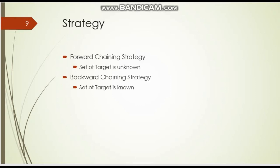The strategies for designing the expert system are two: one is the forward chaining strategy and the other is the backward chaining strategy. In the forward chaining strategy, the set of targets is unknown — we only have the set of actions, rules, and the mapping function, but we do not know what result will come. In the backward chaining strategy, we know the result.